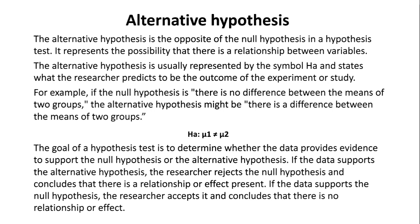The alternative hypothesis is usually represented by the symbol HA and states what the researcher predicts to be the outcome of the experiment or study. For example, if the null hypothesis is there is no difference between the means of two groups,